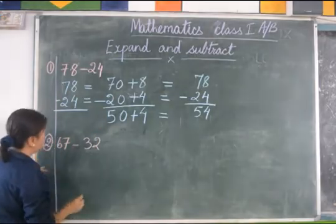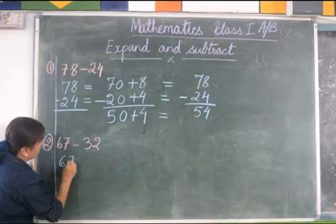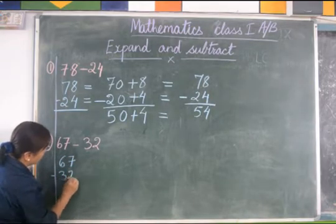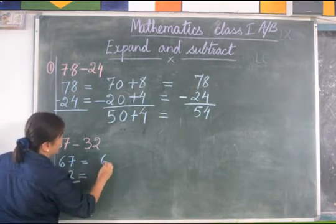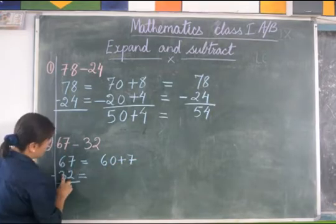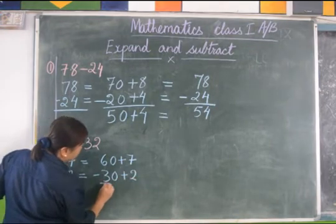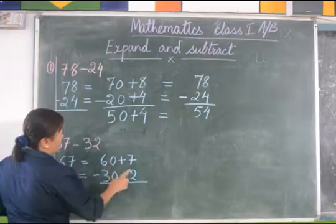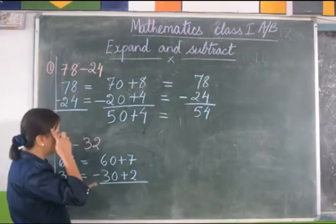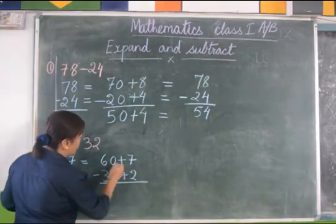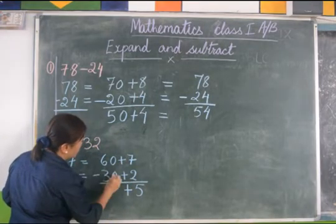Let's take another example: 67 minus 32. 67 is written as 60 plus 7, and 32 is written as 30 plus 2. For the ones column, 7 minus 2: keep the bigger number on top — 7 — and 2 on our finger: 7, 6, 5. So 7 minus 2 is 5. We will bring down this plus. 0 minus 0 is 0.